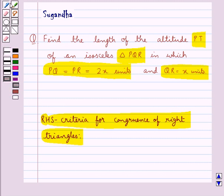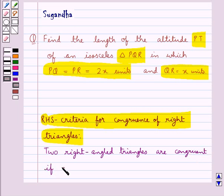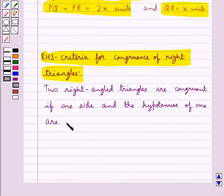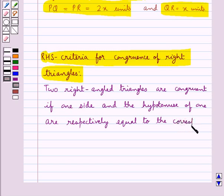According to this we have that two right-angled triangles are congruent if one side and the hypotenuse of one are respectively equal to the corresponding side and the hypotenuse of the other.